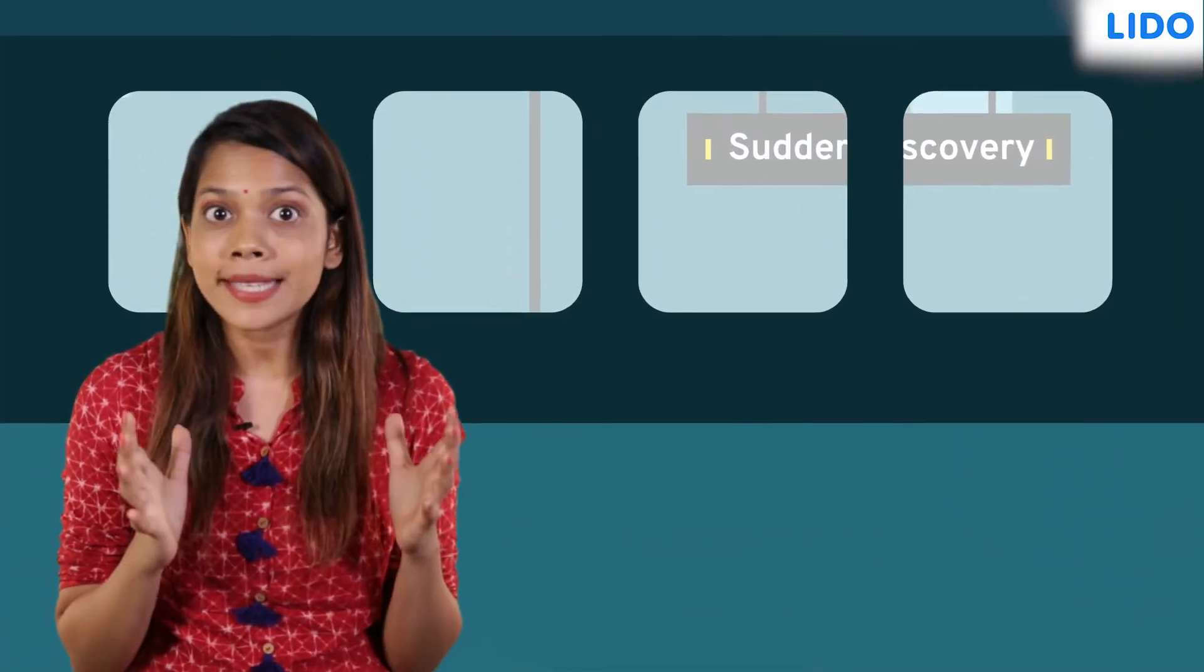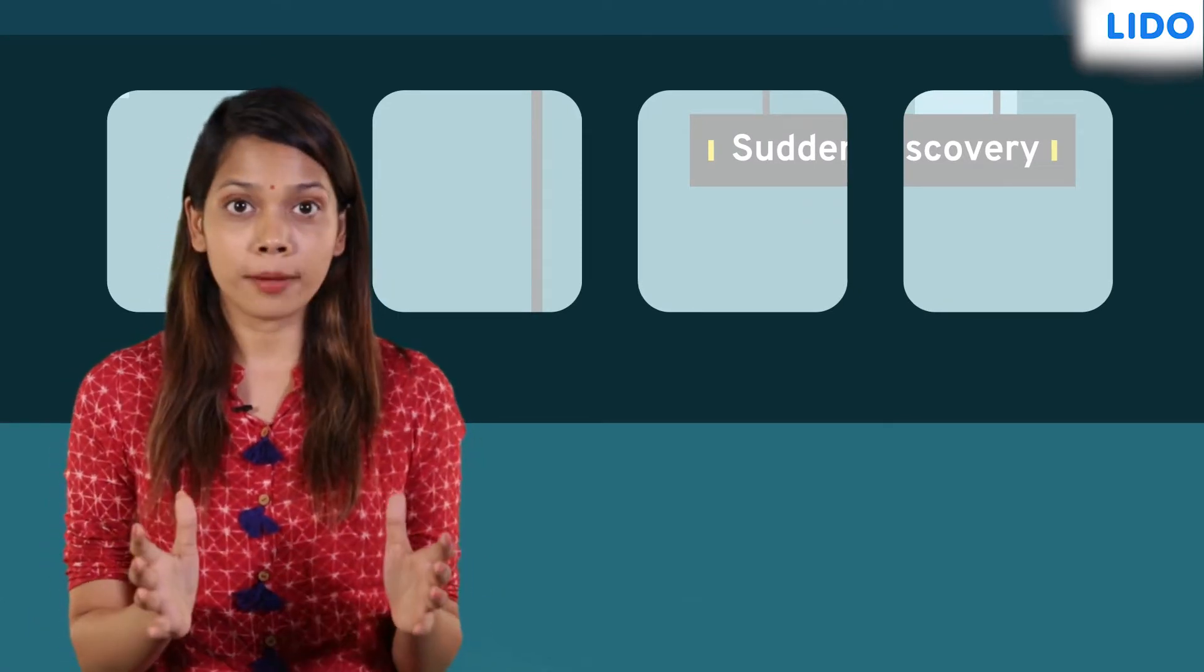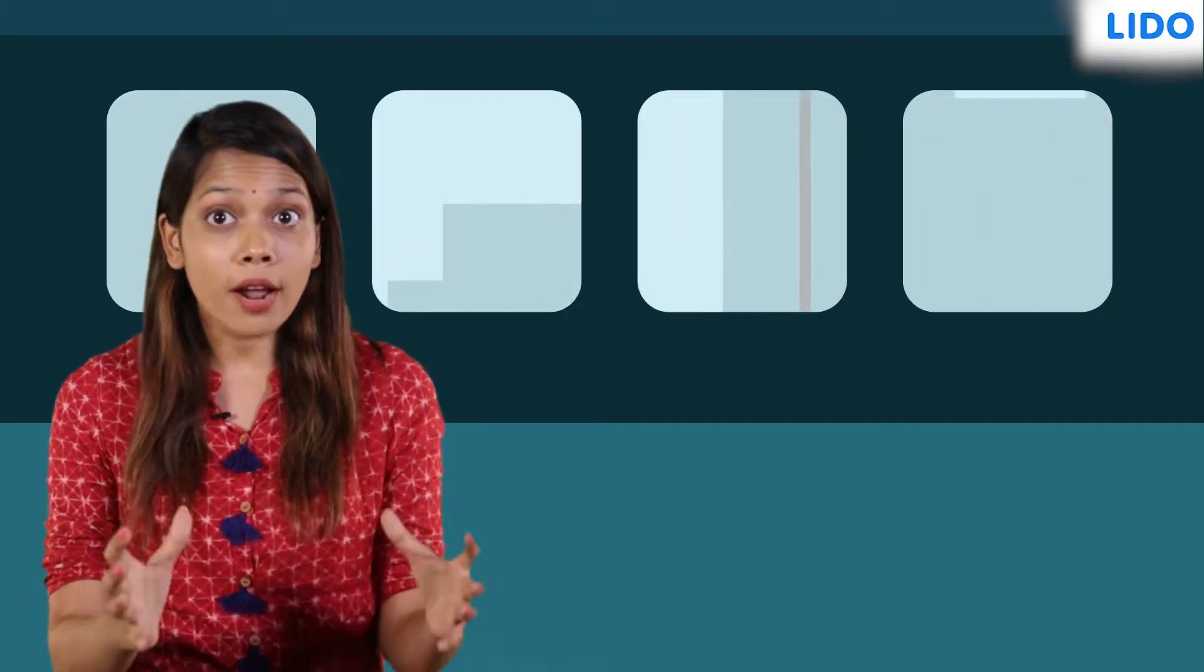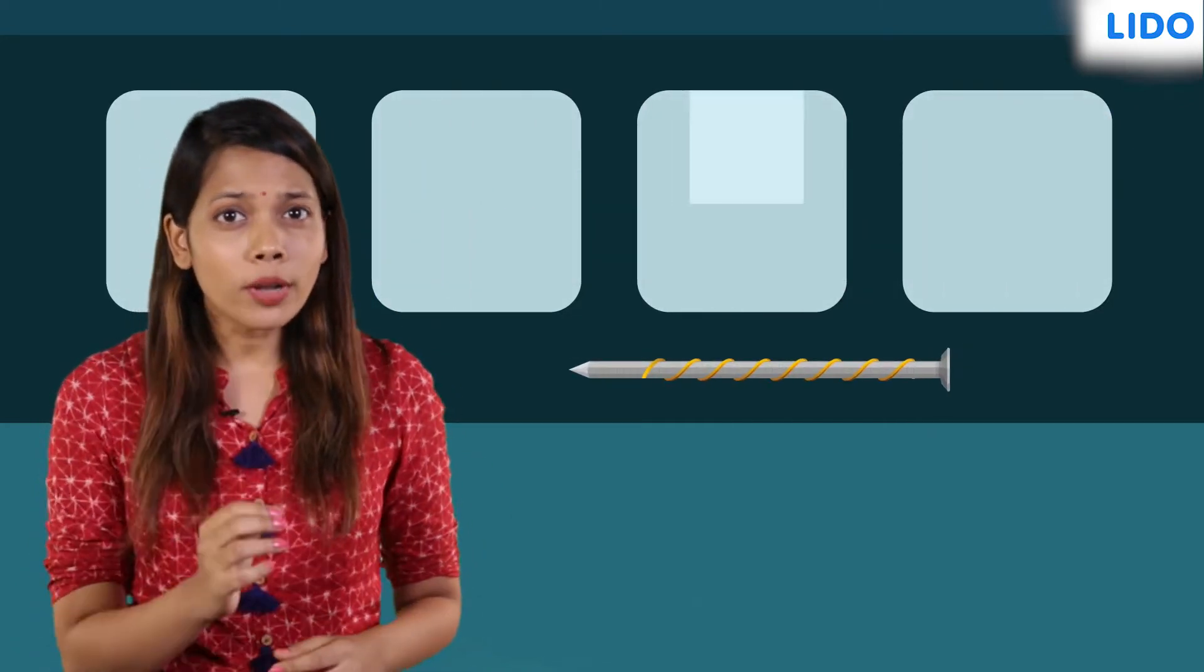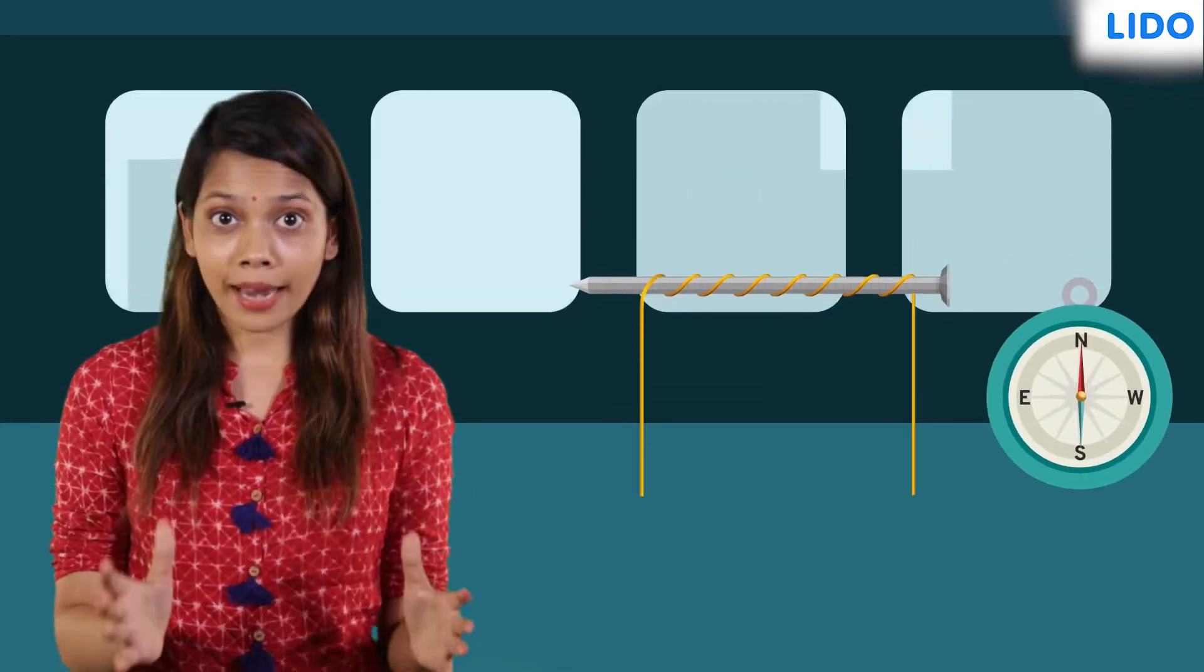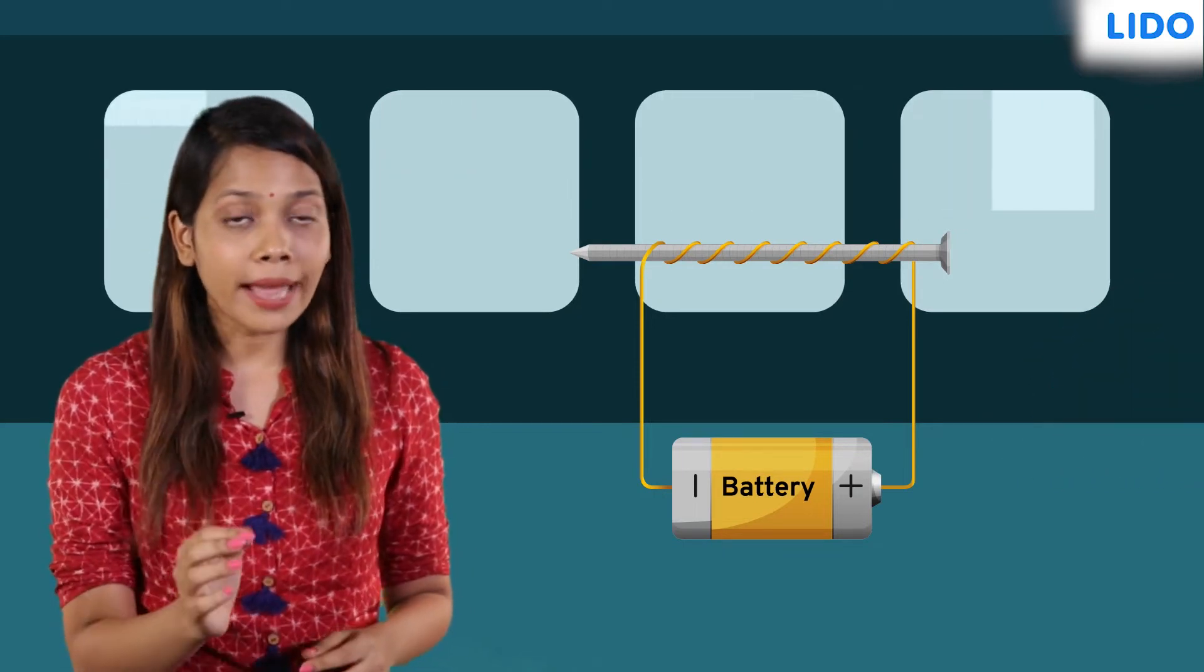This is because the electromagnet was discovered almost accidentally by Ørsted in the early 19th century. Ørsted had wound a long copper wire around an iron rod. He called it a coil. When he connected this coil to a battery, it caused the needle of the compass to move, just like a magnet.